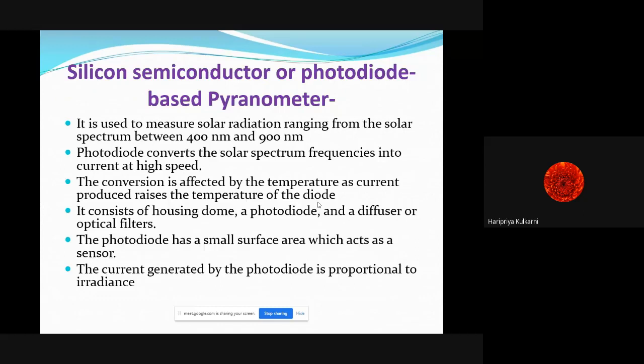It measures solar radiation ranging from 400 nanometers to 900 nanometers. It converts into high-speed current, and that current we are measuring as a reflection of total solar radiations falling on it. As it is a sensitive photodiode element, it may get affected by temperature.